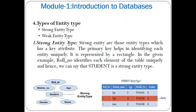Next topic is types of entity. There are two types: strong entity type and weak entity type. Strong entities are those entity types which have a key attribute. The primary key helps in identifying each entity uniquely. A strong entity type is represented by a single rectangle box. For example, the role number uniquely identifies each student, and hence the student entity type is a strong entity type.